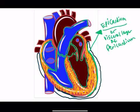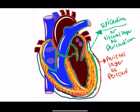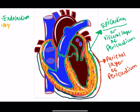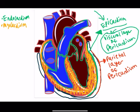This outer layer that I'm outlining all the way around is going to be called the parietal layer of the pericardium. So we've now gone over the endocardium, the myocardium, the epicardium — also called the visceral layer of the pericardium — and we just finished going over the parietal layer of the pericardium.